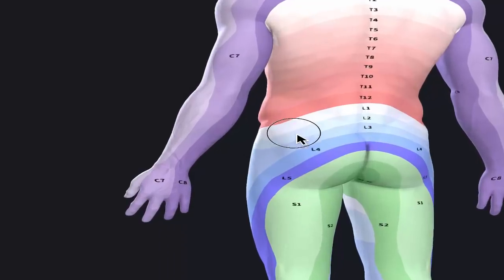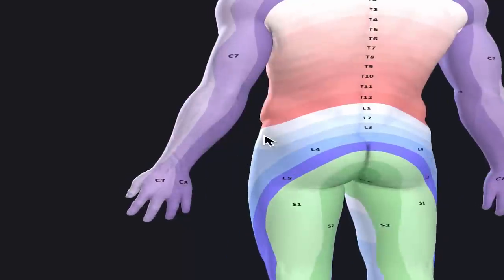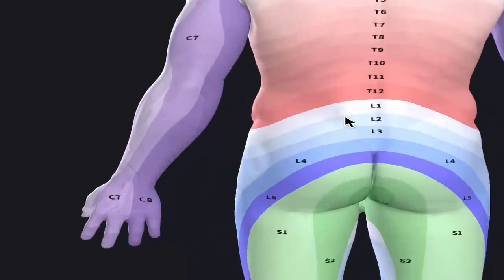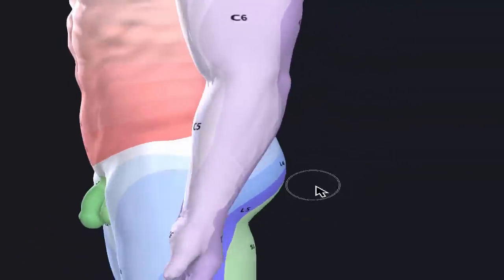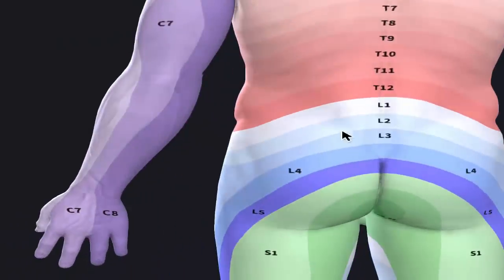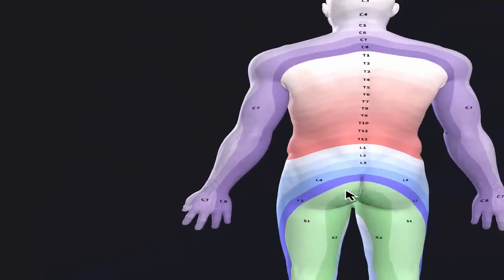The first of our lumbar spine, L1, starts up top and wraps around to the front, and then L3, L4, L5 — they start to move down the leg.